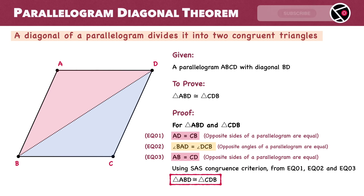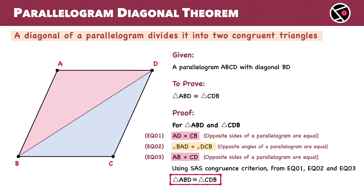Before we move to the second proof, notice that we have used two important properties of parallelograms in this proof. First, opposite sides of a parallelogram are equal. Second, opposite angles of a parallelogram are equal. However, for our second proof, we won't use these properties. Instead, we will rely on just one fundamental property: the opposite sides of a parallelogram are parallel.